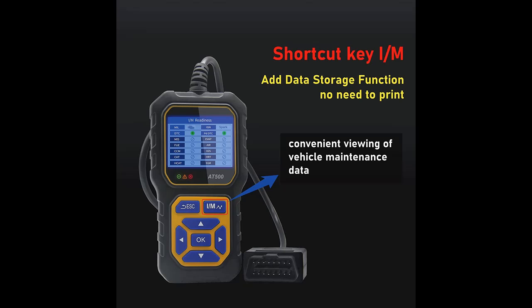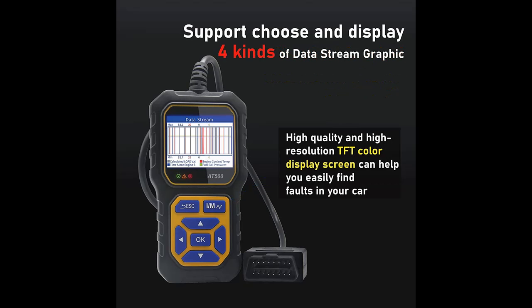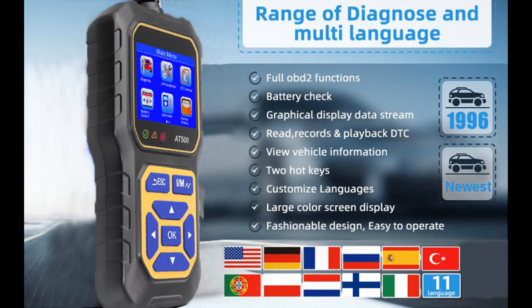The device easily determines the cause of the check engine light (MIL). It retrieves generic codes (P0, P2, P3, and U0) and manufacturer-specific codes (P1, P3, and U1), turns off the check engine light, clears codes, and resets monitors.